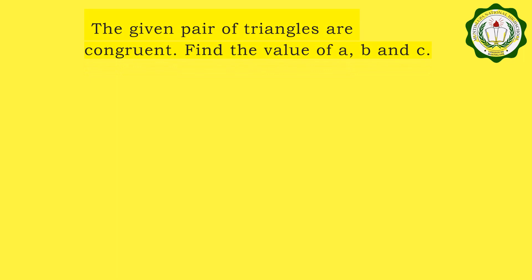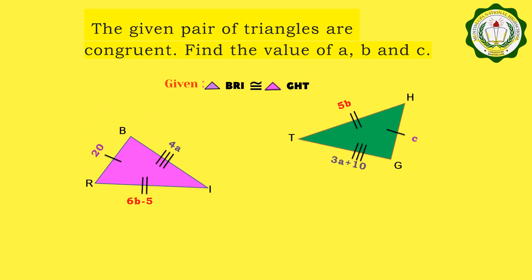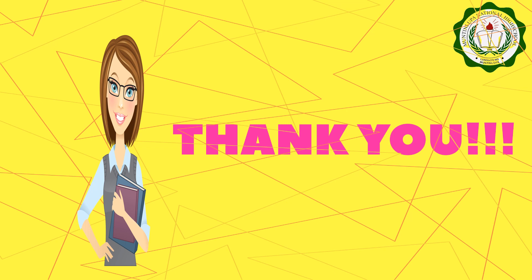For the second part of your assignment, the given pair of triangles are congruent: triangle BRI congruent to triangle GHT. You are asked to find the values of A, B, and C. In triangle BRI: BR is equal to 20, RI is equal to 6B minus 5, and BI is equal to 4A. In triangle GHT: GH is equal to C, HT is equal to 5B, and GT is equal to 3A plus 10. I hope you learned something. Thank you and God bless. See you again next time.